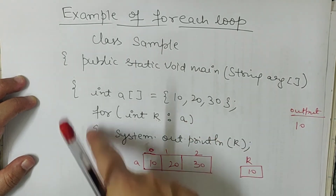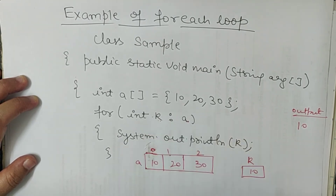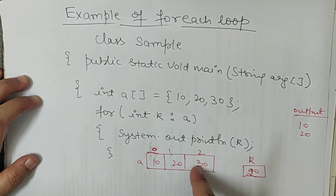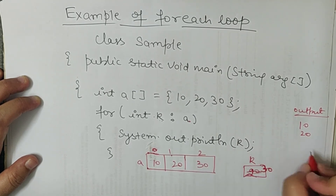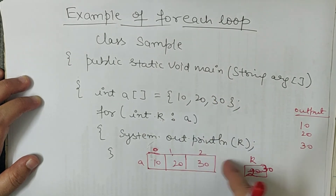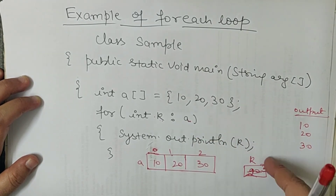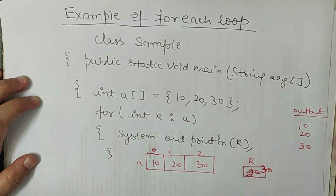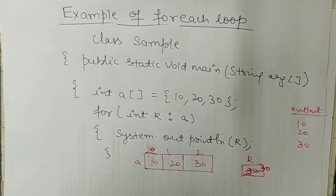10 print hoga, phir loop dobara chalega aur next element dekhega — index 1 mein 20 hai. Ab k ke andar 20 daal dega, 10 overwrite ho jayega, aur k print hoga 20. Phir loop phir chalega, 30 k mein daal dega aur print hoga. Phir array mein kuch nahi padha toh loop se bahar aa jayega. Agar array mein aur elements hote jaise 40, 50 to woh bhi dalta raha. Loop array ki starting se shuru hota hai aur tab tak chalta rahega jab tak array ki size khatam nahi ho jaati — printing each element in array. So aapko clear ho gaya hoga for-each loop in Java. Thank you so much everyone.